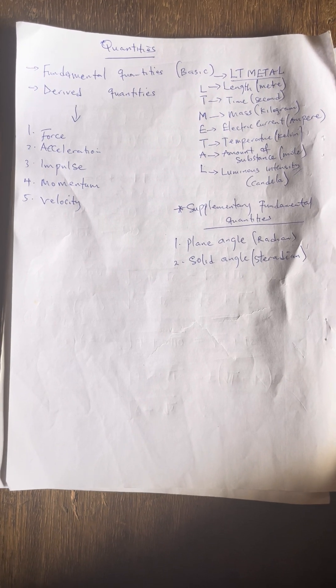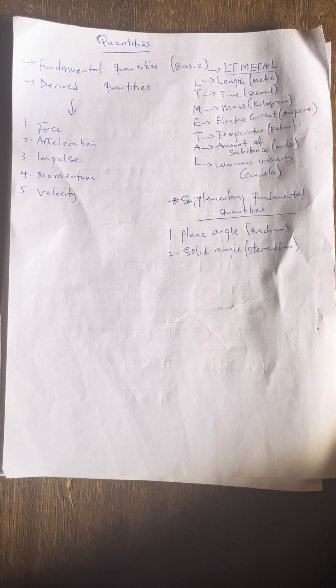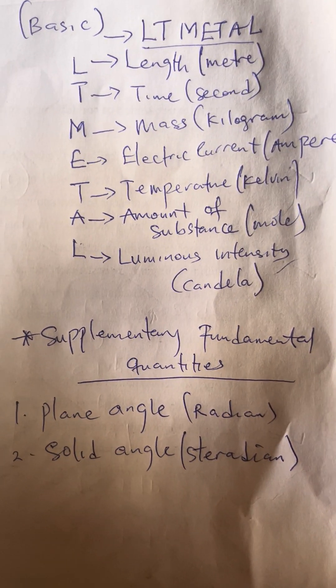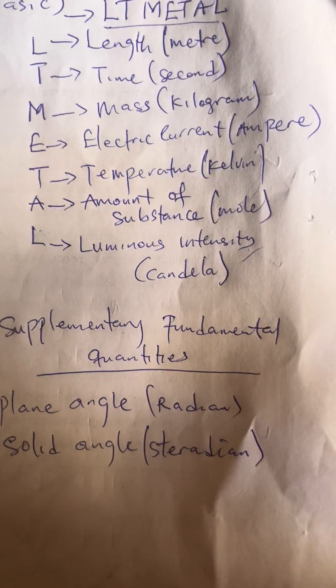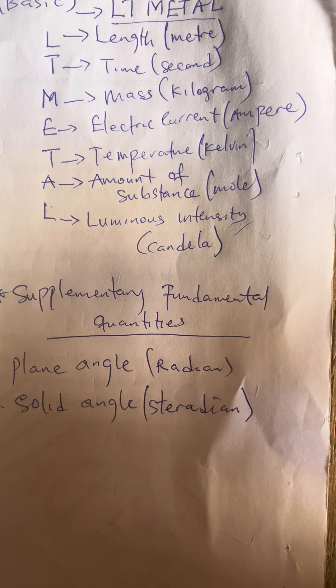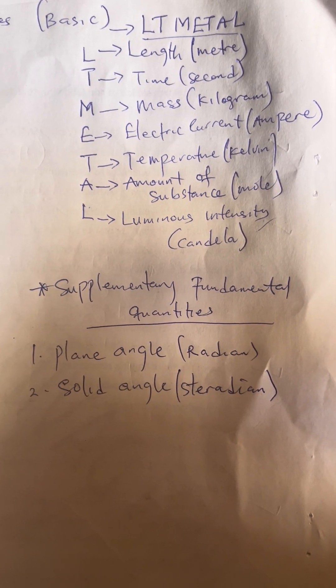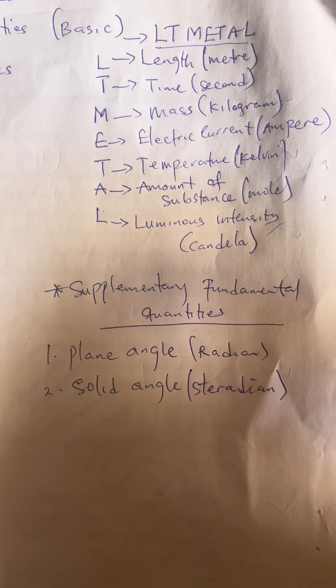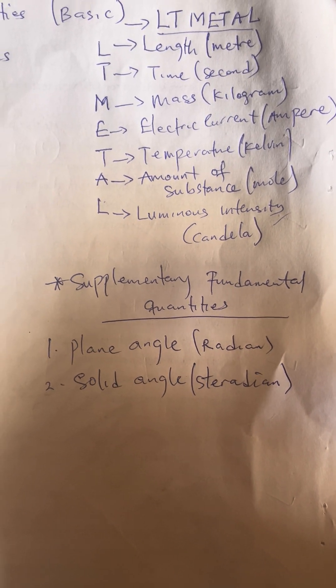Don't forget the code: fundamental quantities — we have seven, known as L-T-Meta. L stands for length, T stands for time, M stands for mass, E stands for electric current, T stands for temperature, A stands for amount of substance, and L stands for luminous intensity. Length is measured in meter, time in seconds, mass in kilogram, electric current in ampere, temperature in Kelvin, amount of substance in mole, and luminous intensity in candela.